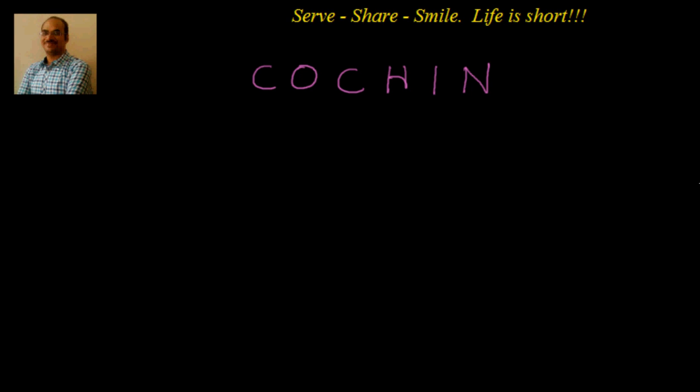Let's go ahead and try to find out what is the rank of COCHIN. For that, the first step is we have to write them in alphabetical order. Let us see: C is there two times, so we have C, C, H, I, N, O.